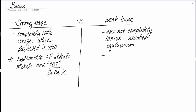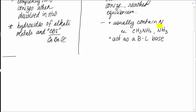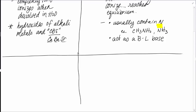Weak bases are a little weird. One thing you should know about weak bases is that they usually contain nitrogen — that's your big clue. For example, CH₃NH₂ contains nitrogen. Or everyone's favorite, ammonia, is a typical weak base. The key with this is that they act as a Bronsted-Lowry base, which means they are a proton acceptor. We'll do examples of each of those to wrap us up.